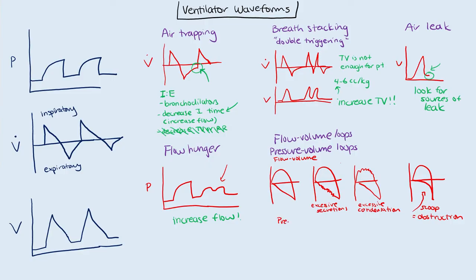Next, we're going to look at pressure volume loops. The normal pressure volume loop is going to look something like this — just kind of a little leaf shape — and this is going to correspond to a PEEP of five. What I want you to know here is that this actually gives us a sign of how the patient's compliance is doing.